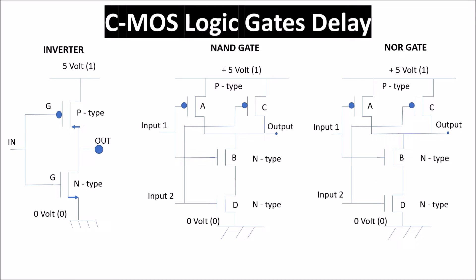This video explains the propagation delay of the main logic gates: the inverter, the NAND and the NOR gates. By means of these gates, it's possible to build every other logic gate, and these are also the fastest gates. Let's see why.